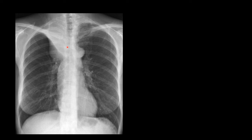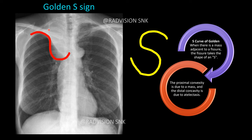Next case: there is homogeneous opacification of the right upper lobe limited by the horizontal fissure, but you can clearly see the medial margin is convex and the lateral margin is concave, resembling an S-shape. This is called the Golden S sign, typically seen in upper lobe masses or central lung masses causing obstruction and collapse of the upper lobes. The medial convexity is due to the mass and the lateral concavity is due to the collapse.